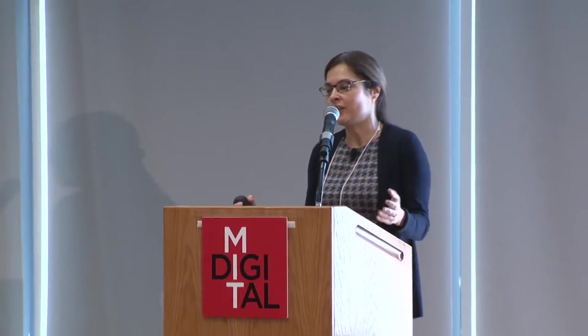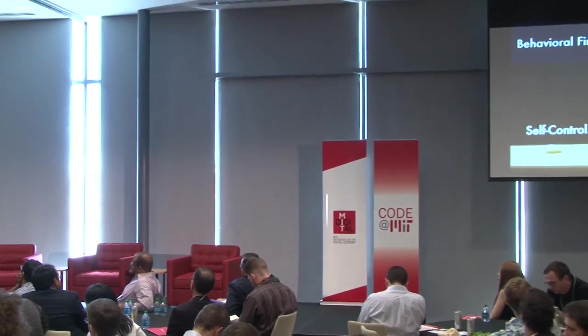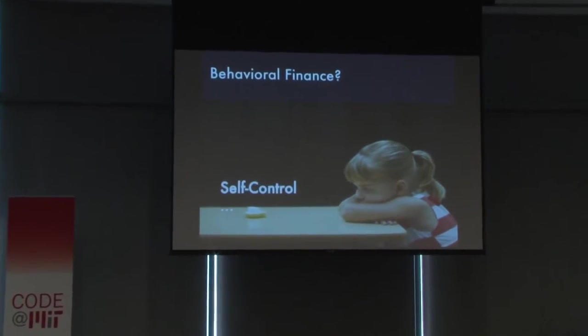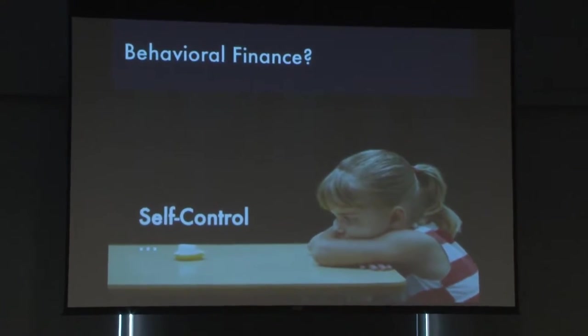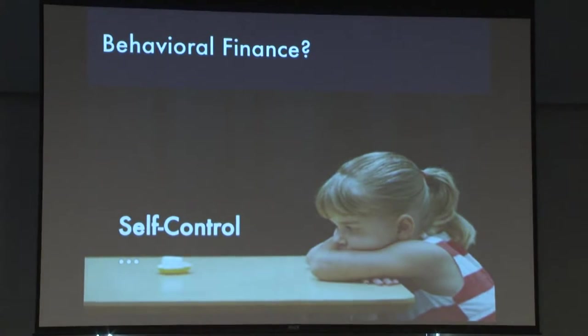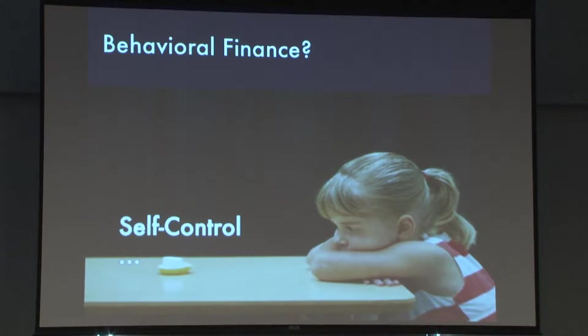Two important behavioral biases: first, self-control issues. The famous marshmallow experiment ran on children in the late 70s and 80s showed that the ability to self-control has more predictive power on children's future outcomes than even IQ. This has spurred research on teaching children persistence, grit, and self-control. For financial markets, self-control is an important bias: if you overspend but are otherwise relatively solvent, you might carry big balances on your credit card, making you very profitable to a credit card company.